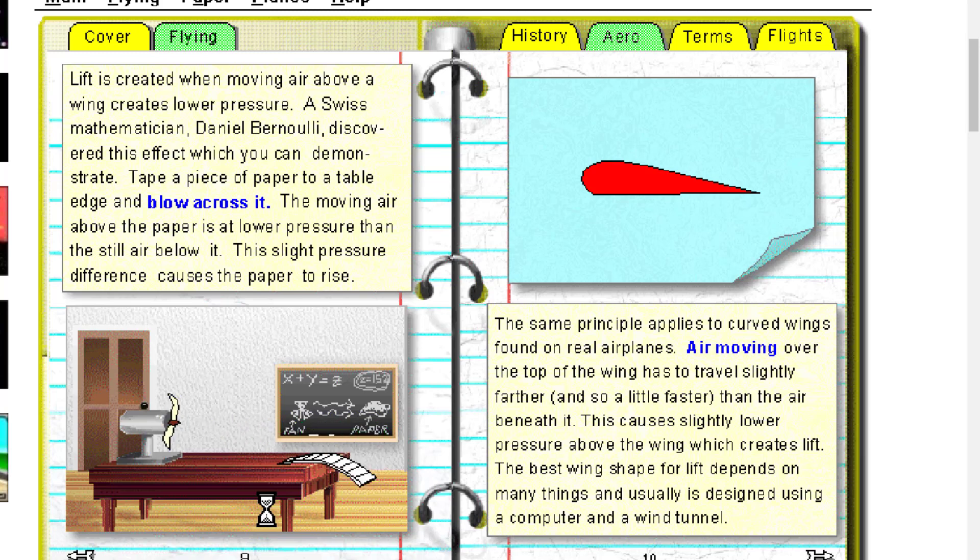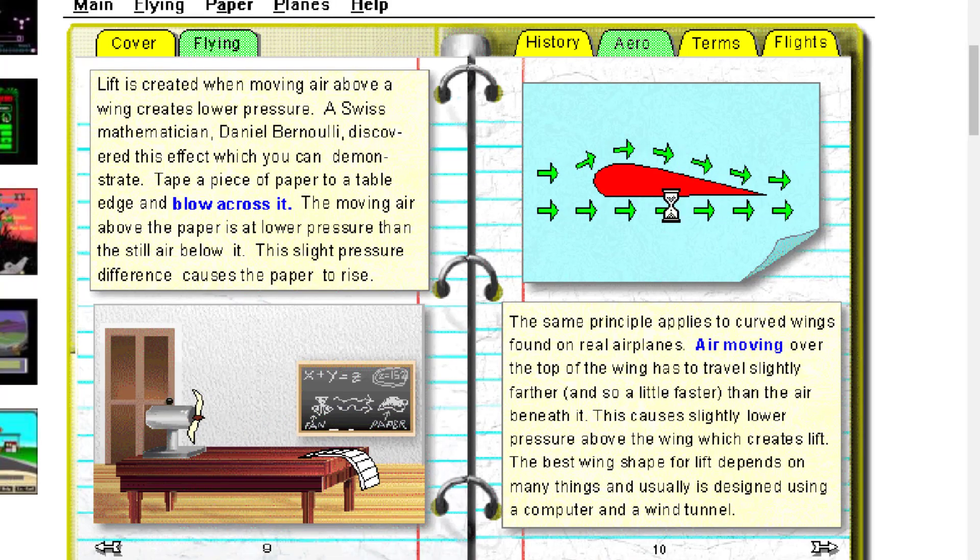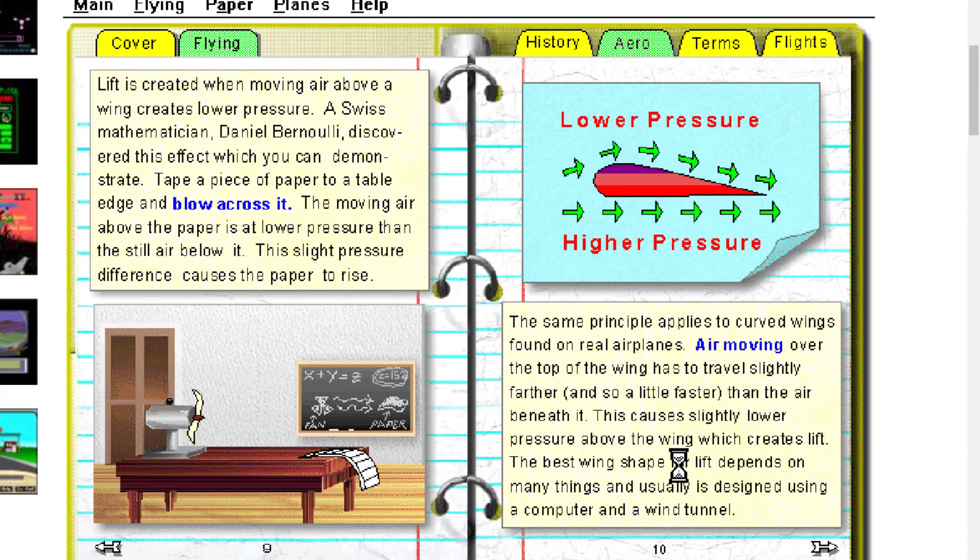The same principle applies to the curved wings found on real airplanes. Air moving over the top of the wing has to travel slightly further and so a little faster than the air beneath it. This causes slightly lower pressure above the wing which creates lift.